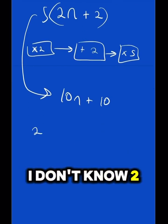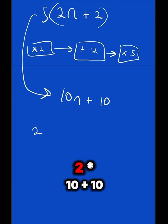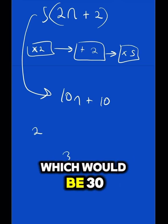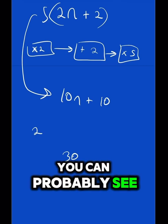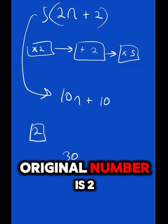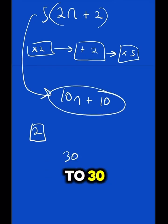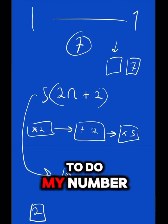If your original number is 2, then that would be 2 times 10 plus 10, which would be 30. You can probably see where I'm going with this. So, if your original number is 2, this would take you to 30. Now, all I need to do, my number is 7.